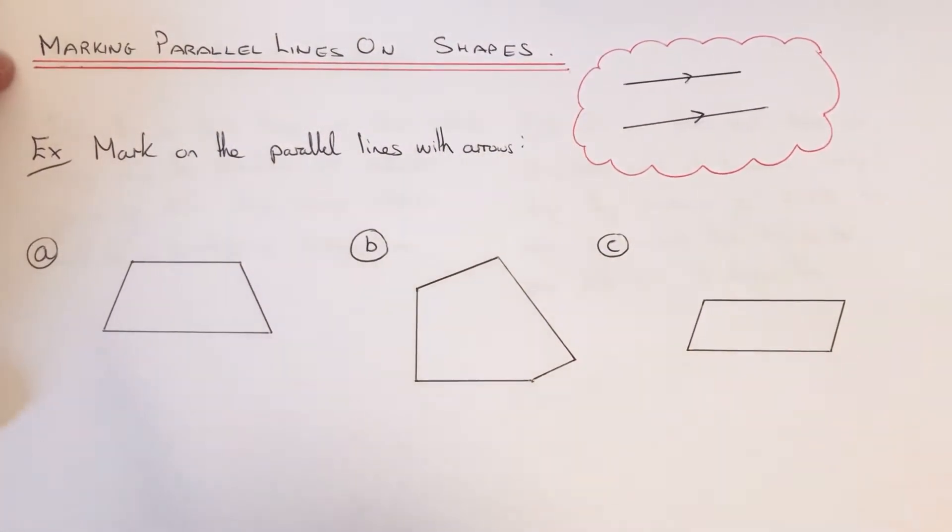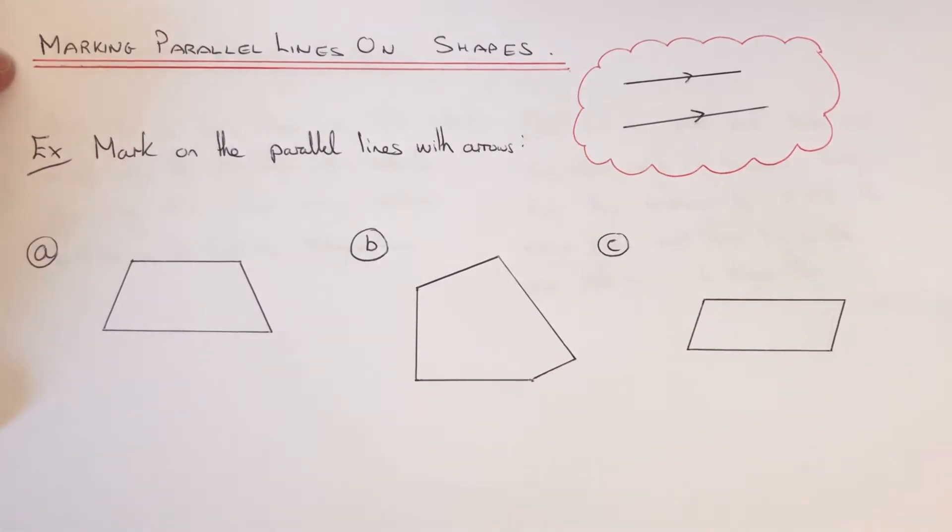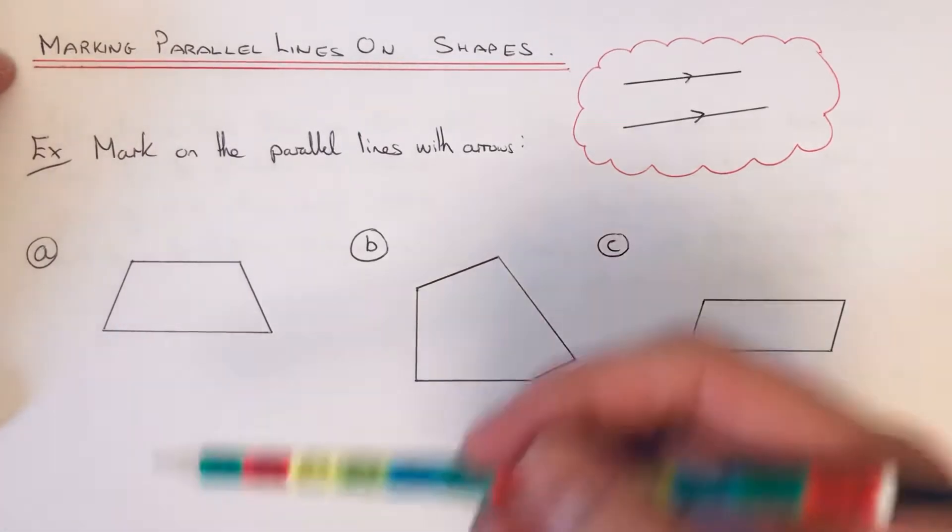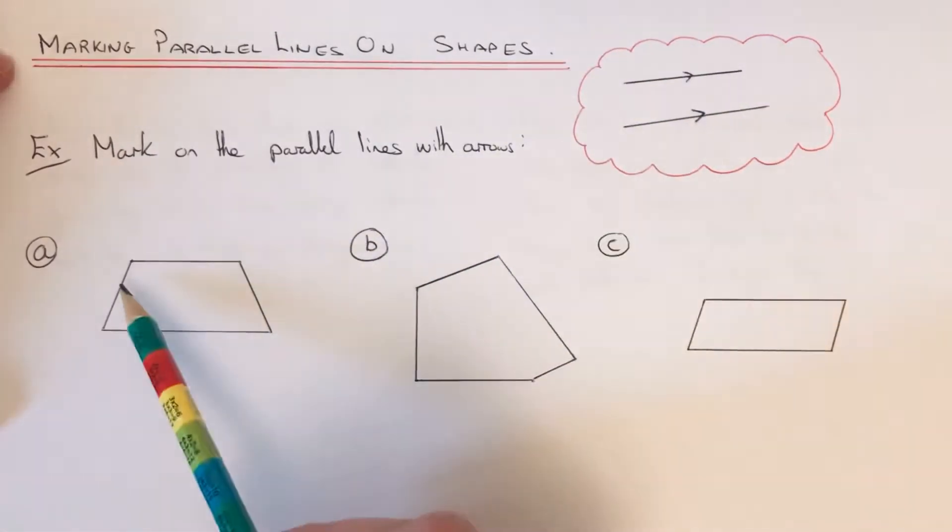Okay, so let's have a look at the examples. We've got mark the parallel lines with a pair of arrows. Let's have a look at shape A. Now, the parallel lines are usually opposite each other, so it'll either be this pair or this pair here.